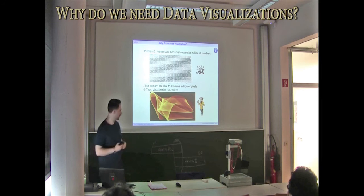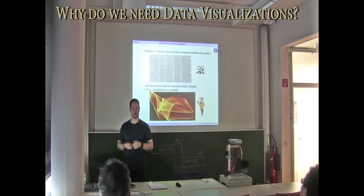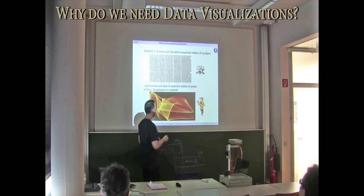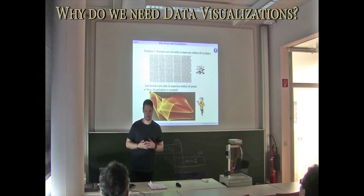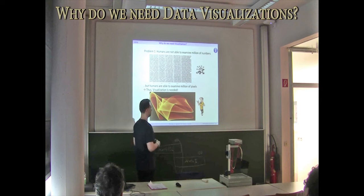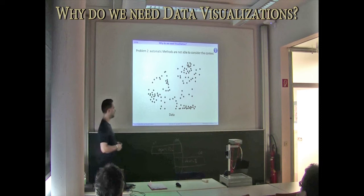This example goes back to our first example. We have raw data that we're not able to analyze visually because it's elaborate for us. But we are able to visualize and see millions of pixels at once. So we can use the human perception system.